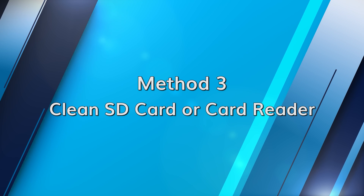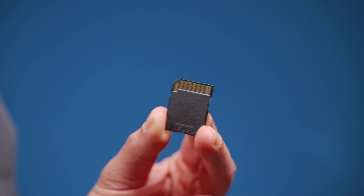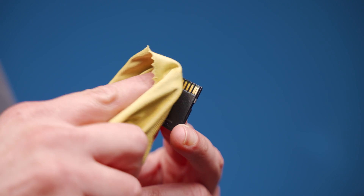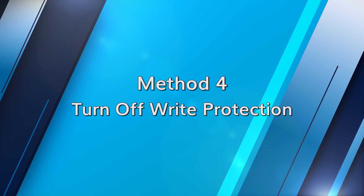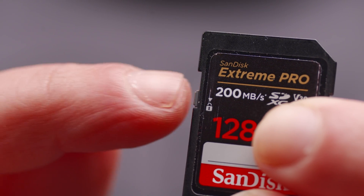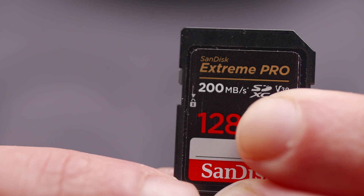Sometimes dust or debris can hinder the connection. Gently remove the SD card from the slot, then use either a can of compressed air or a clean soft cloth to remove any dust or debris. Also clean the card reader as well if possible. Reinsert the SD card and check if it's detected. If the SD card is write protected, it won't be detected, so let's disable write protection. There is often a small slider on the side of the card to toggle write protection — ensure this is slid to unlock. Reinsert the card and check if it's detected.